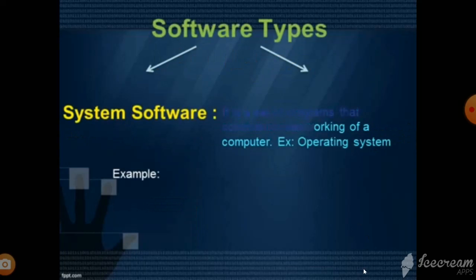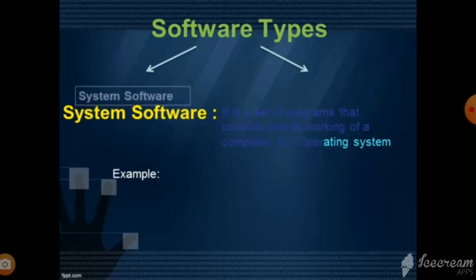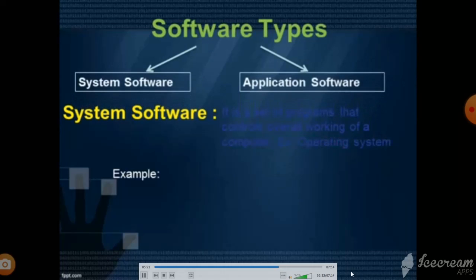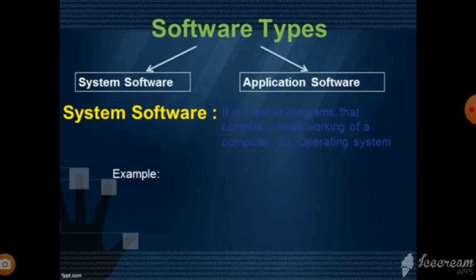There are two types of software: system software and application software. System software. It is a set of programs that controls the overall working of a computer. Operating system is a part of system software that makes a computer run. It manages all the input and output operations. It also manages the link between the different parts of a computer and the user. Operating system is the interface between the user of a computer and computer hardware.